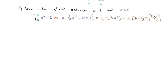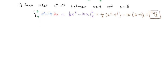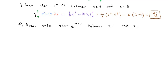So we're really just giving context to what we learned in the previous video. Let's find the area under f of x equals e to the negative x plus 2 that falls between x equals 1 and x equals 5. Area under a curve is an integral, so we're integrating from 1 to 5 of e to the negative x plus 2 dx.